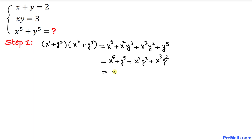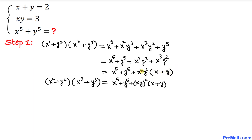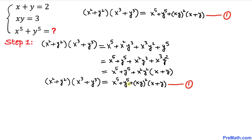So we can write x power 5 plus y power 5 equals x square plus y square times x power 3 plus y power 3, minus x square y square times x plus y. We can rewrite x square times y square as (xy) power 2. Let's call this Equation 1.